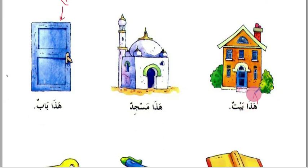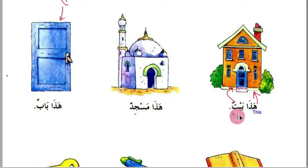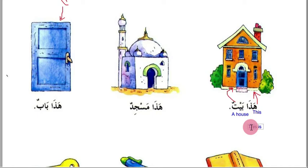'Hadha baytun' — 'hadha' means 'this' and 'baytun' means 'a house'. You can see there is no third word for 'is'. In English we write 'this is a house', but in Arabic there is no word for 'is' in this sentence.